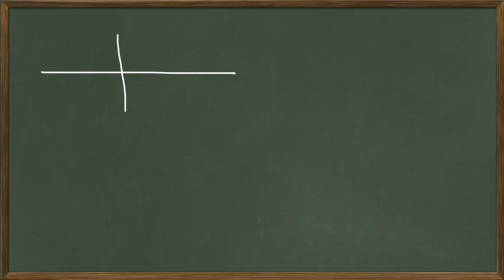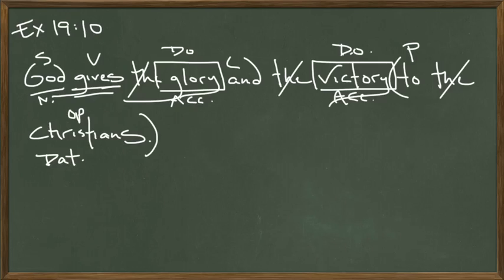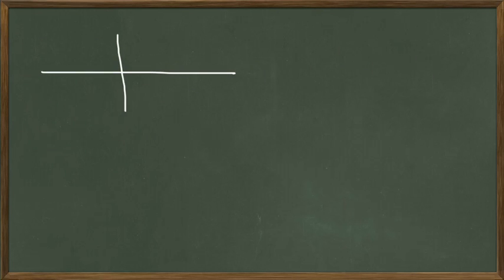So, let me go back and look — 'God gives the glory and the victory to the Christians.' The subject of the sentence goes on the left side, so we put 'God' over here. The verb goes on the right side, and they're both split. So we have 'God gives.' That's the basic sentence right there.